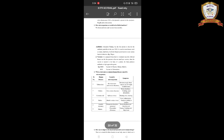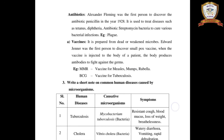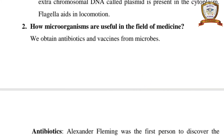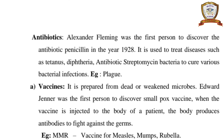Next: How are microorganisms useful in the field of medicine? We obtain antibiotics and vaccines from microbes. Alexander Fleming was the first person to discover the antibiotic penicillin in the year 1928. It is used to treat diseases such as tetanus and diphtheria. The antibiotic streptomycin is obtained from Streptomyces bacteria to cure various bacterial infections. Example: plague.